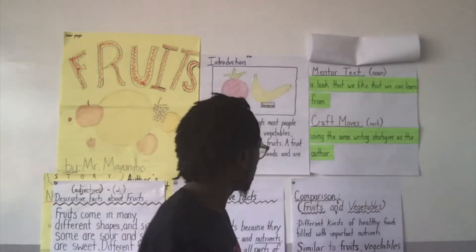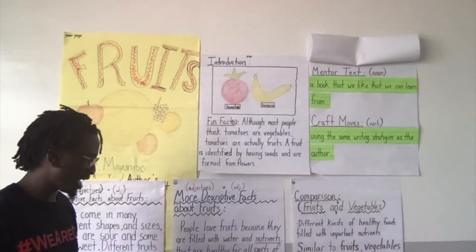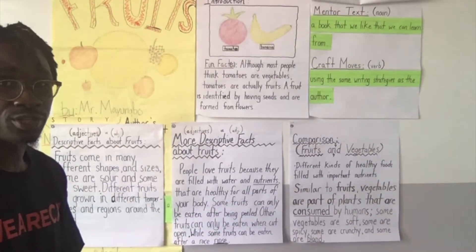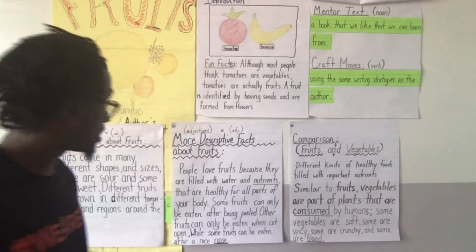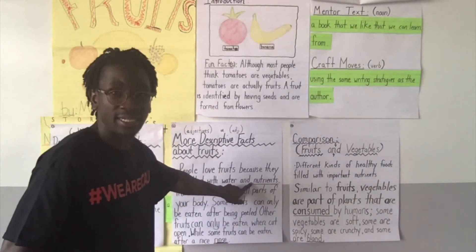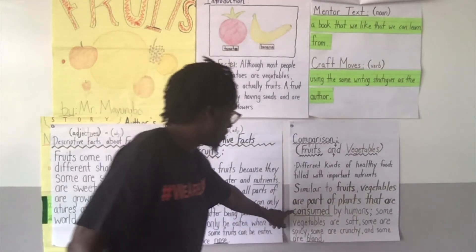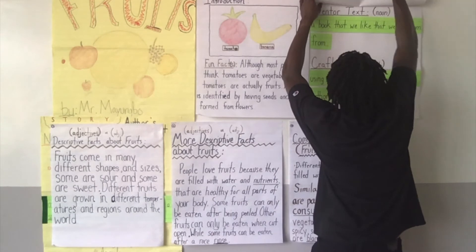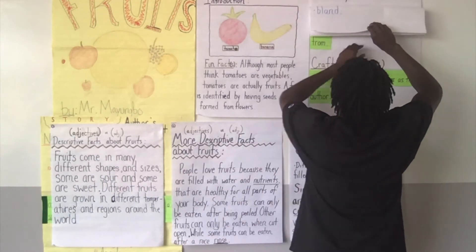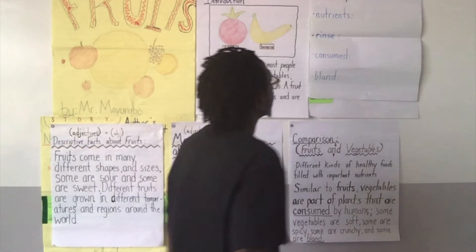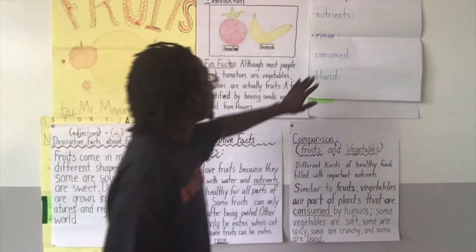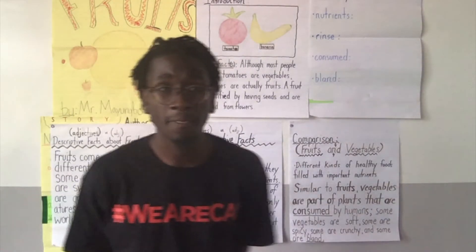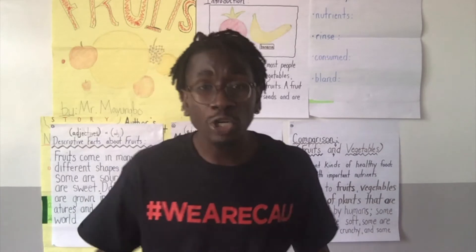Today let's take a look at what we already have to see if we have any words that could fit into our glossary. As you can see, any word that is underlined is a special word — they all go into our glossary. So we have: nutrients, rinse, consumed, and bland.